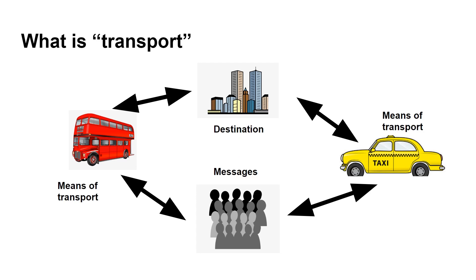In terms of IoT, basically there are messages that we want to go from one place to another — to a destination — and we need a means of transport: a pipe that you can send these messages down. This runs over TCP/IP, so we're talking Ethernet, Wi-Fi, over the Internet, so that small devices can send information across the Internet or across a local area network from one device to another.